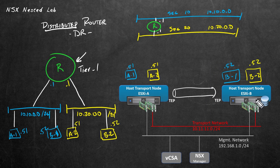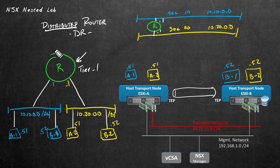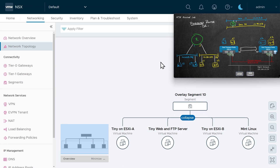So without further ado, let's take our nested lab environment that we've built up to this point, and let's create these two network segments. We'll also create a logical layer 3 router, also called a gateway, that can do routing between them.